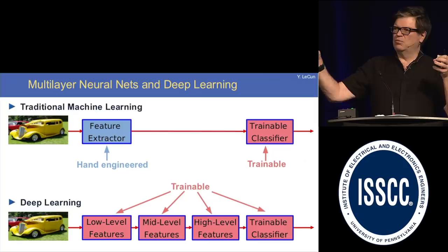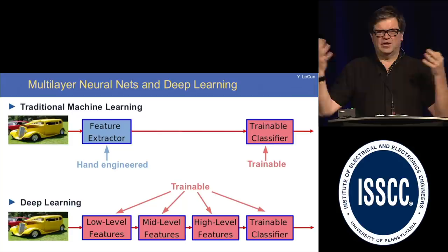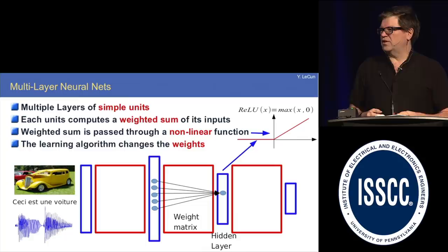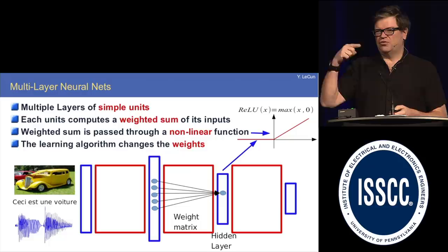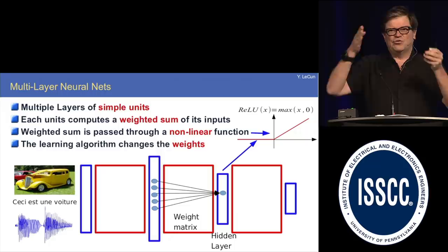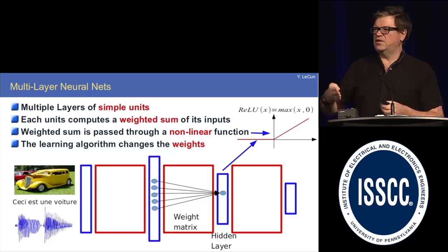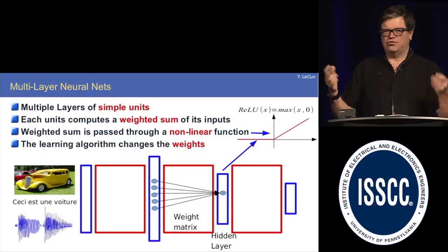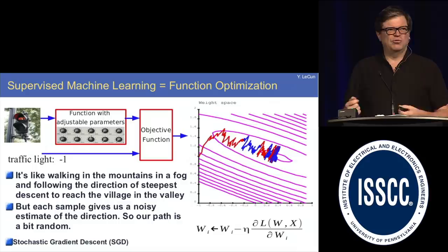The idea is that you can essentially stack multiple modules, each of which is trainable, and train them end-to-end using a gradient descent-based method. What you put in those modules are very simple functions from the hardware point of view — things like multiplying a vector by a matrix, then passing all the components through a point-wise non-linearity as simple as a half-wave rectifier. You stack linear operators — matrix multiplication — with point-wise non-linearity. You can prove that with only two layers, you can approximate any function. But there's an advantage in stacking multiple layers, giving you more powerful function representations.